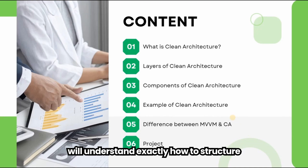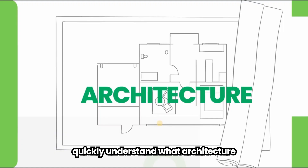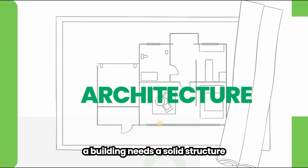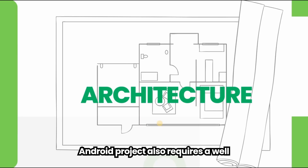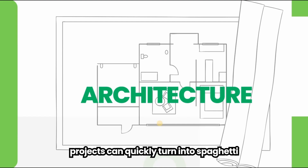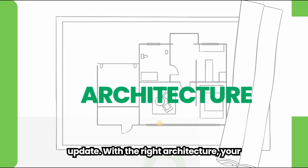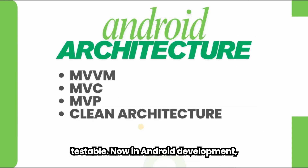By the end you will understand exactly how to structure your projects like a pro. Before we jump into clean architecture, let's quickly understand what architecture actually means. Think of architecture as the blueprint of your app — just like a building needs a solid structure to stay strong and flexible, your Android project also requires a well-defined structure to handle changes, scale smoothly, and remain easy to maintain. Without good architecture, projects can quickly turn into spaghetti code where everything is mixed, hard to debug, and risky to update.